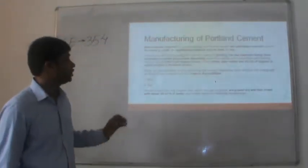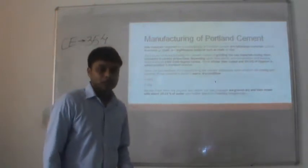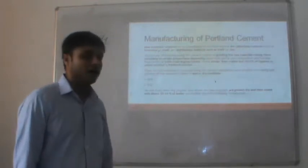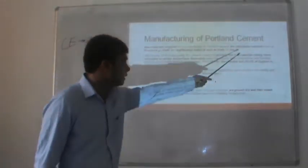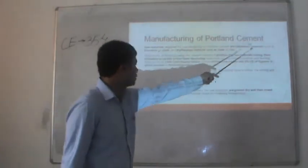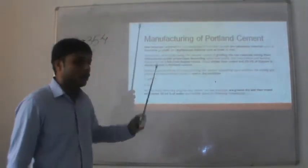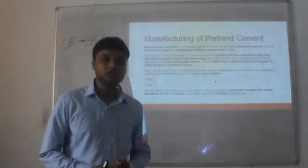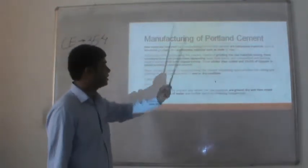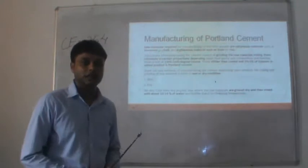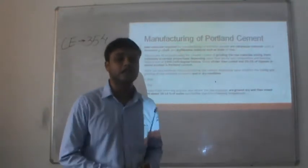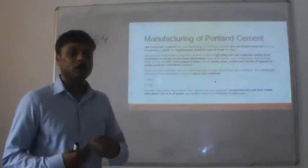The raw materials required for manufacturing Portland cement are calcareous materials such as limestone or chalk, which contain more calcium, and argillaceous materials such as shale or clay, which contain more clay or silicon.